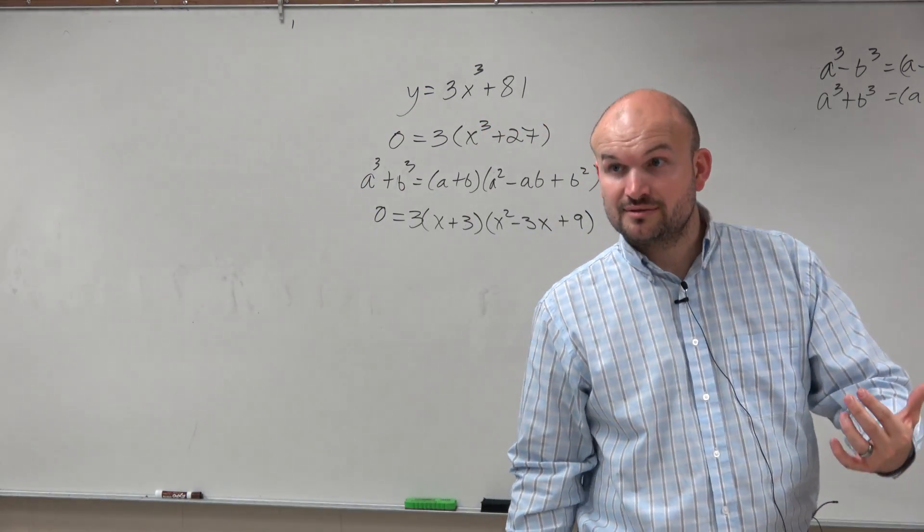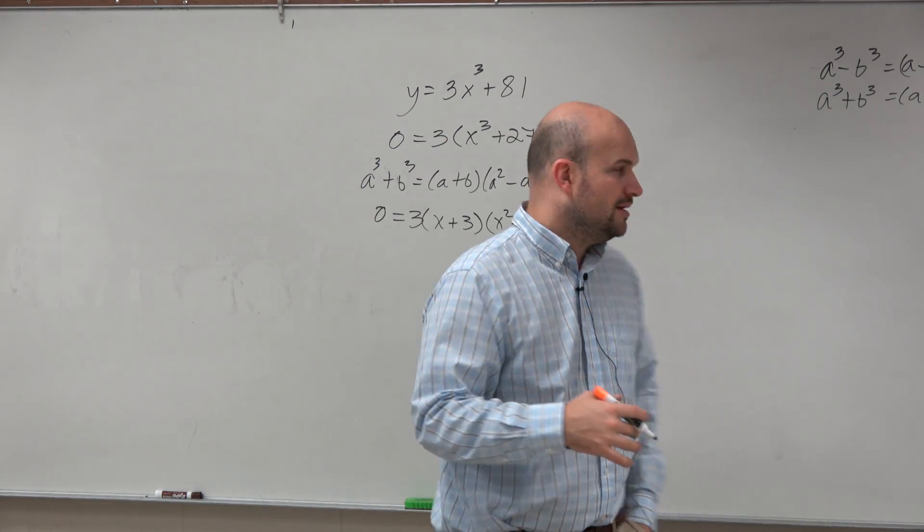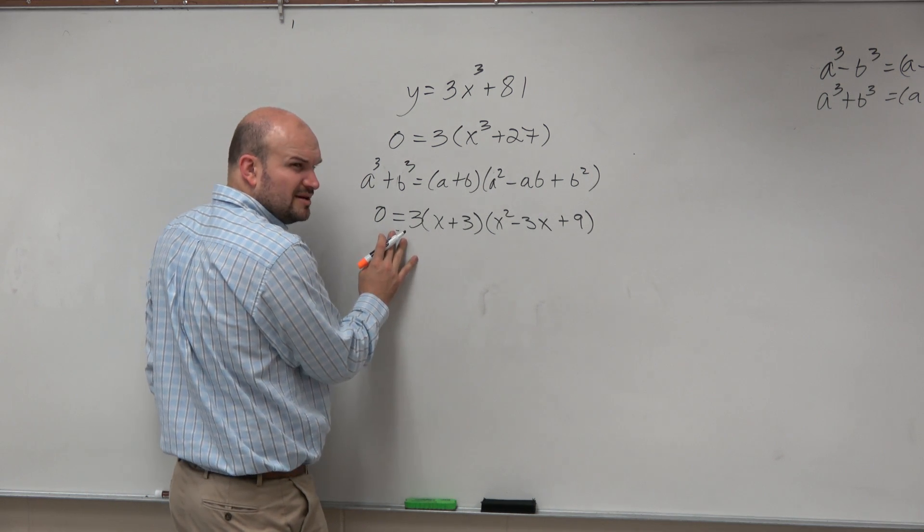Now, to find my linear factorization, I'm sorry, to find the zeros, I can set each one of these equal to zero. But I'm going to, so again, what do I do with this 3 here? What does that 3 do? Does anybody remember what the 3 did?